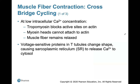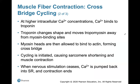At very low intracellular calcium levels, tropomyosin will always block the active sites on actin, myosin heads cannot attach, and the muscle fiber remains relaxed. The voltage-sensitive proteins in T-tubules change shape, causing the sarcoplasmic reticulum to release calcium to the cytosol. When we get a higher intracellular calcium concentration, calcium binds to troponin, troponin changes shape, moves tropomyosin away from the myosin binding sites, allowing crossbridge formation and sarcomere shortening. When nervous stimulation ceases, calcium is pumped back into the sarcoplasmic reticulum and contraction ends.